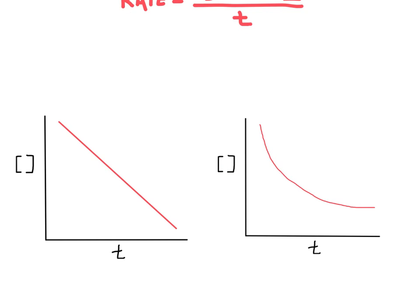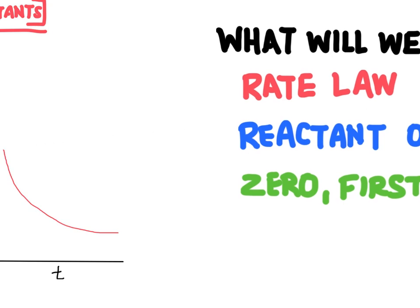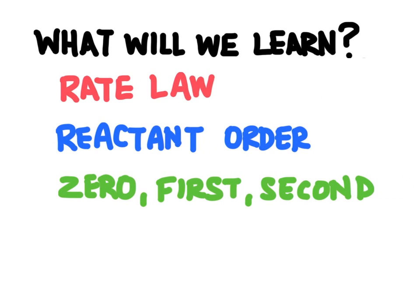What are we going to learn in this video? First we're going to learn what a rate law is, and then we're going to learn three different types of reaction orders. We're going to learn how to recognize these reaction orders based on experimental data and graphs.